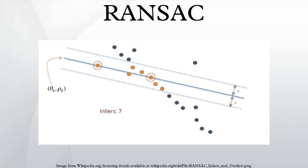Those points that fit the estimated model well, according to some model specific loss function, are considered as part of the consensus set. The estimated model is reasonably good if sufficiently many points have been classified as part of the consensus set.